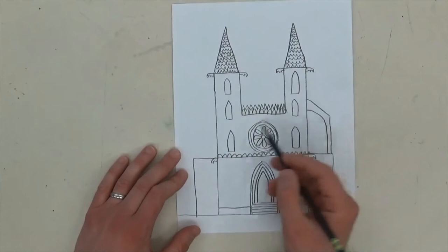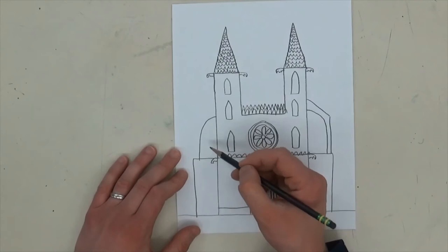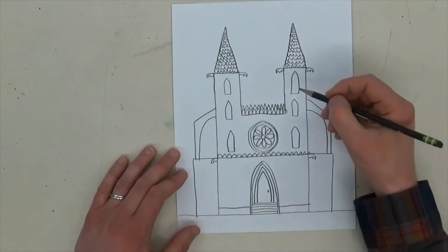And they're buttresses because they go on the side and they hold up the building, but they're not actually connected to the building right here. It's all open, so it's called a flying buttress. So that's a unique thing on Gothic cathedrals.